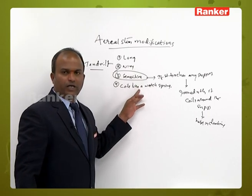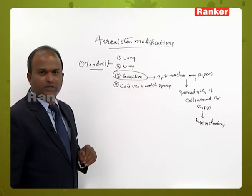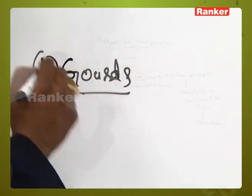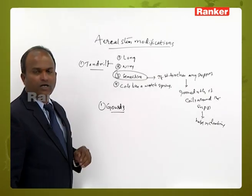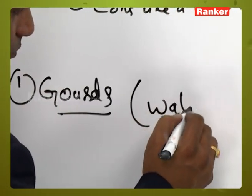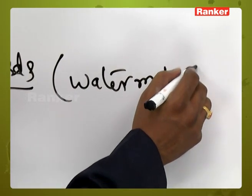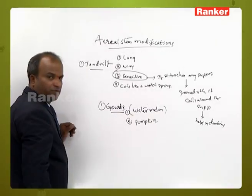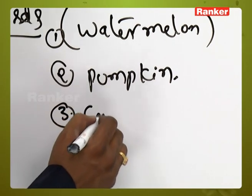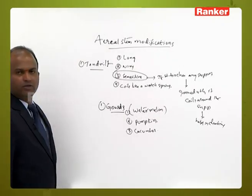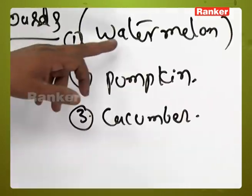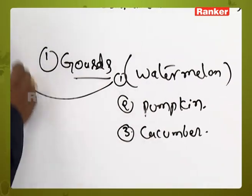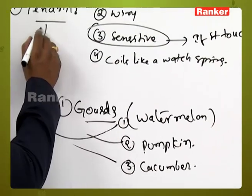Sufficient food material is prepared. Examples of tendrils include gourds — the first example. Gourds include watermelon, pumpkin, and cucumber. These three plants — watermelon, pumpkin, and cucumber — all show tendrils.